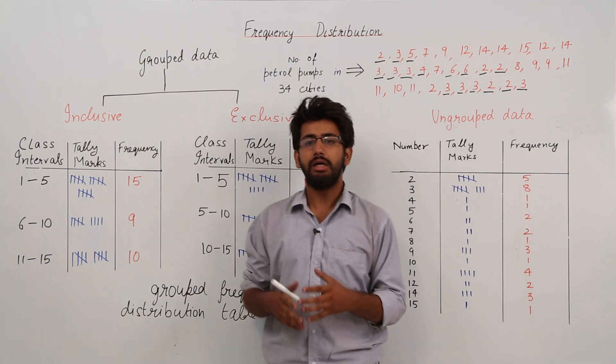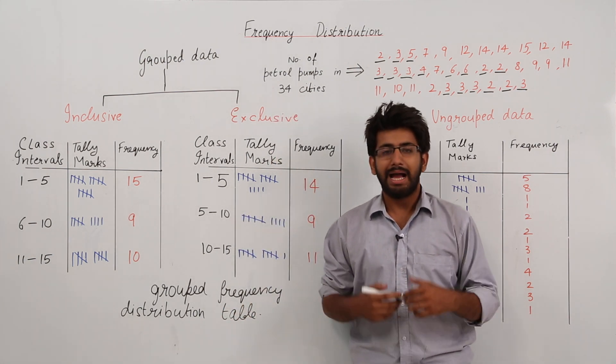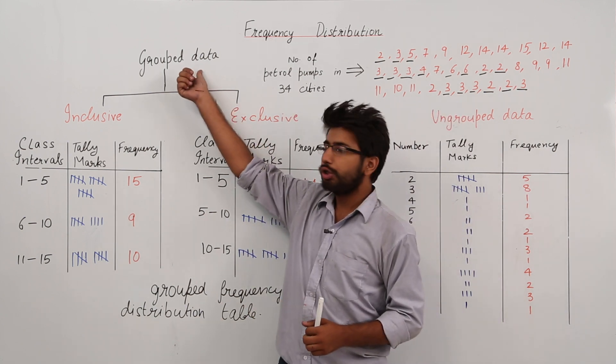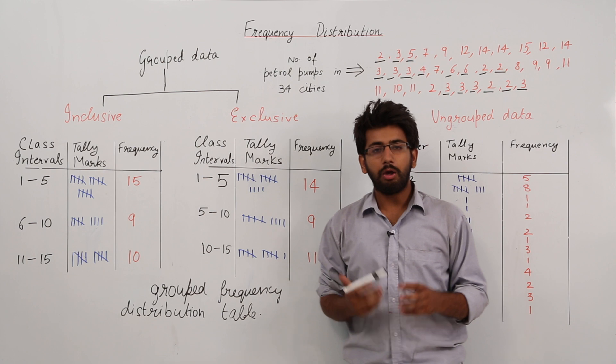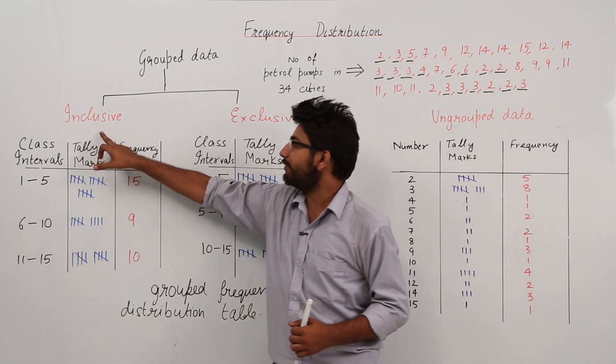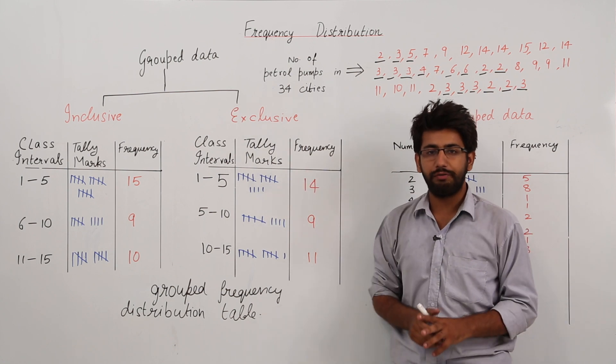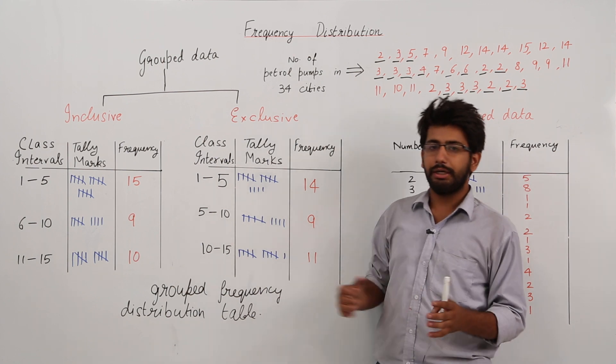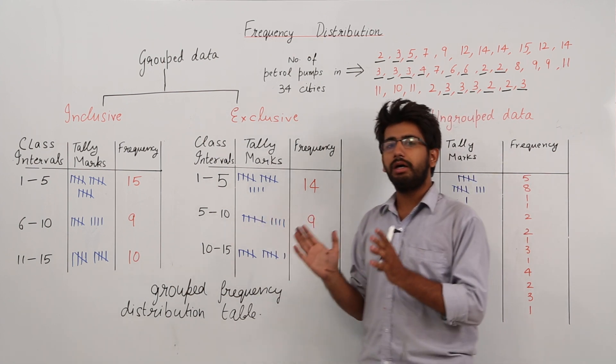Now when we form groups, this formation of groups is known as the grouping of the data. Or I can say that data in which groups are formed is known as grouped data. Now grouped data can be represented in two ways: one is inclusive way and the other is exclusive way, and these ways are also known as grouped frequency distribution tables.